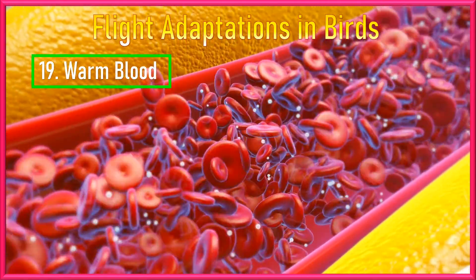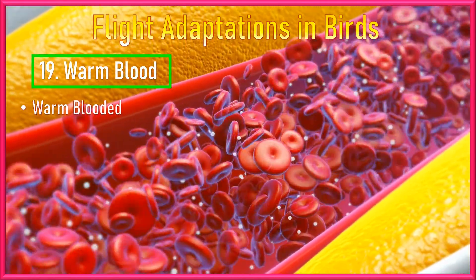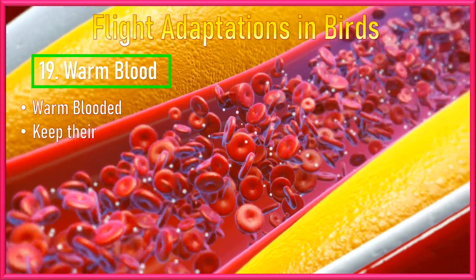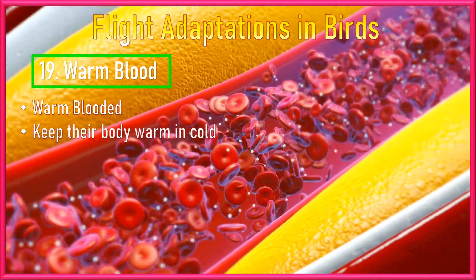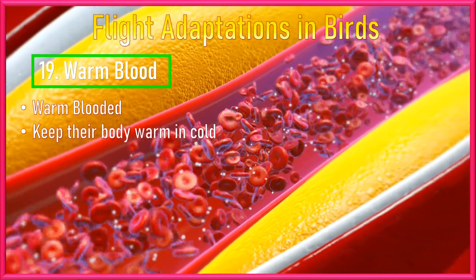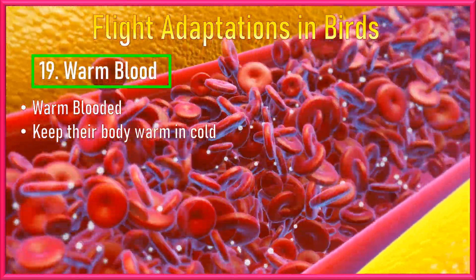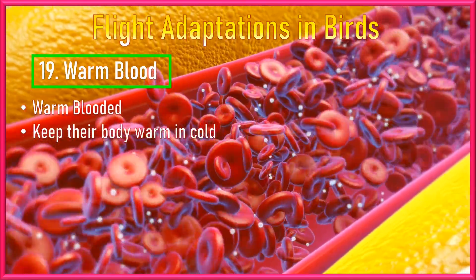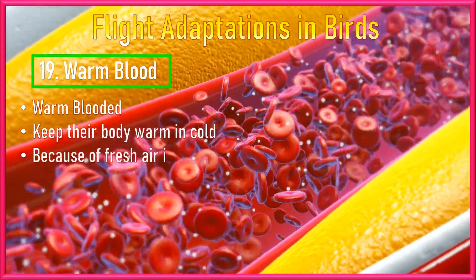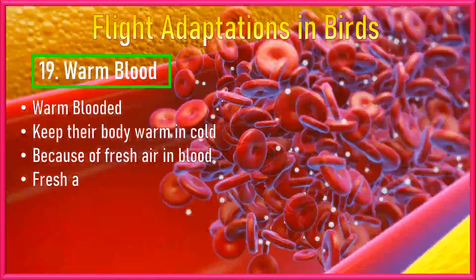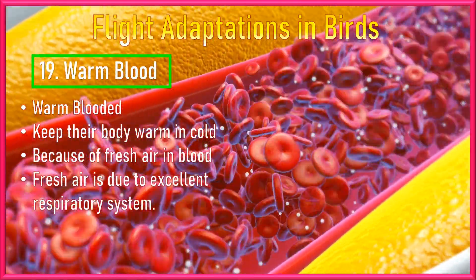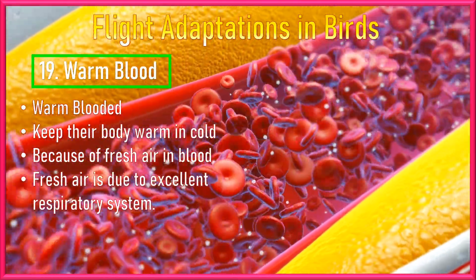Number 19: Warm Blood. Birds are warm-blooded. Even if the air around them is cold when they are flying, their body stays warm. This happens because their blood receives lots of fresh oxygen inside them, due to their excellent respiratory system as previously discussed.